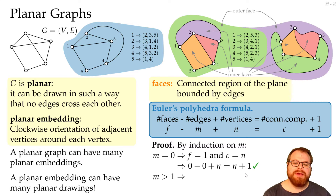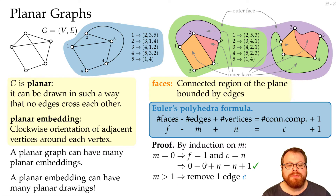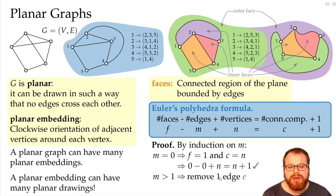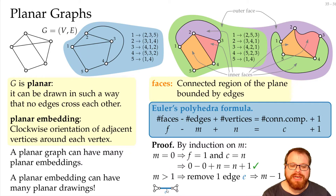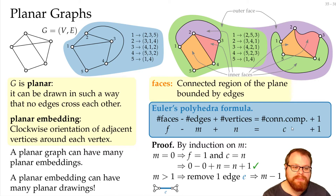For larger m, we reduce to a case of smaller m by picking any edge E and removing it. There are two cases. In the first case, removing this edge splits a connected component into two. Then m is reduced by one, the number of faces and vertices stay the same, but the number of connected components goes up by one. So we have one more on each side and the formula still holds.